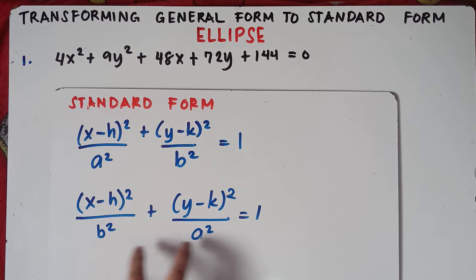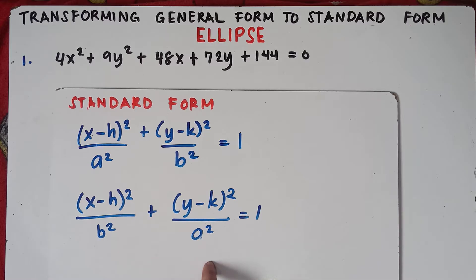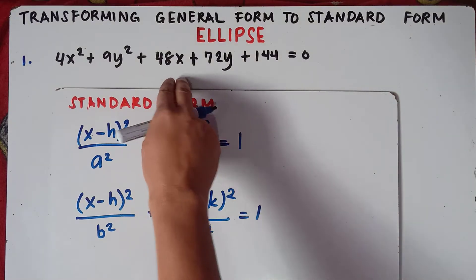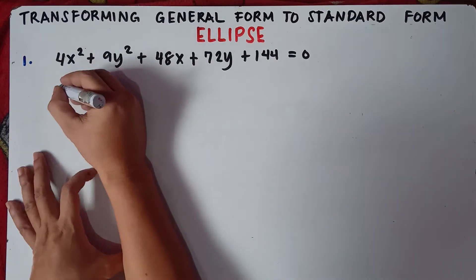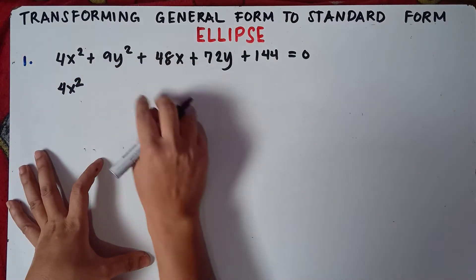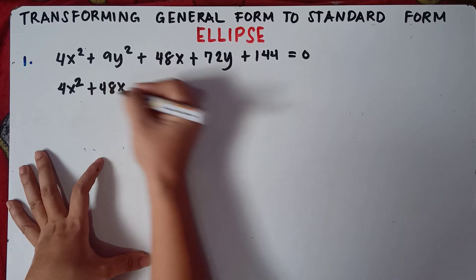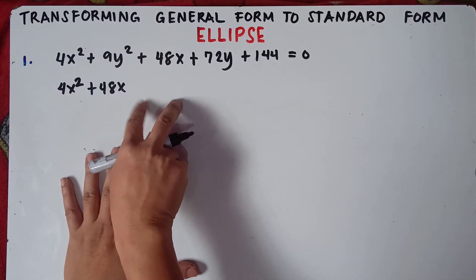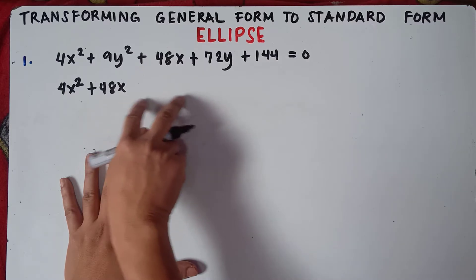The standard form would be quantity x minus h squared over a squared plus quantity y minus k squared over b squared equals 1. You can also have this equation in which your a is on the inline with the y-axis. Your a is always the major axis. So let's transform this equation into this form. First thing to do is we need to separate the x variables and the y variables. That would be 4x squared, then copy the x variables, so plus 48x. You need to put a space because we need to do the completing the square. We need to add a new constant in the equation for x.